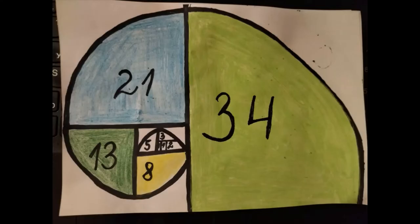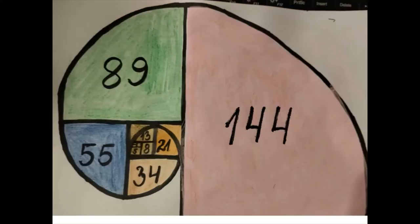In mathematics, the Fibonacci numbers, commonly denoted Fn, form a sequence—the Fibonacci sequence—in which each number is the sum of the two preceding ones.